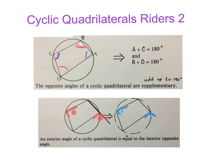Before we start we quickly have to look at the two theorems we use in cyclic quadrilaterals. Firstly, we know the opposite angles of a cyclic quadrilateral are supplementary — they add up to 180 degrees. Angle A plus C will be 180 degrees, those are the two purple ones, and angle B plus angle D will be 180 degrees, those are the two red ones.